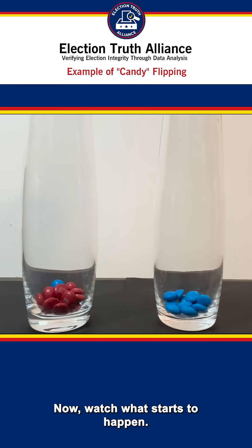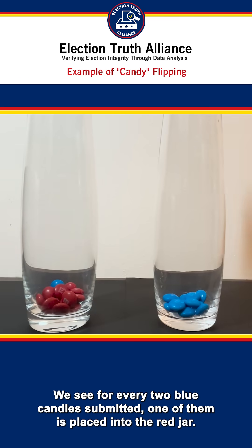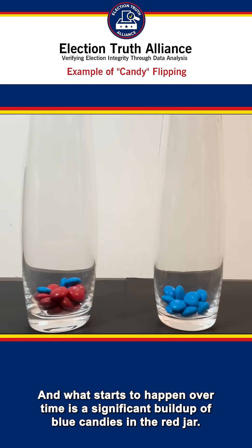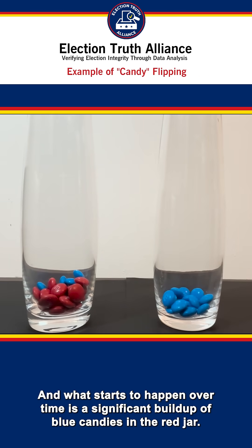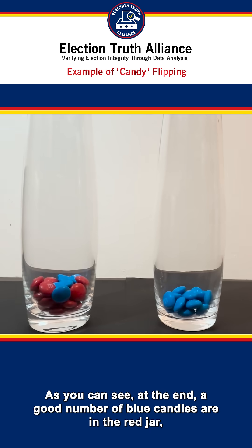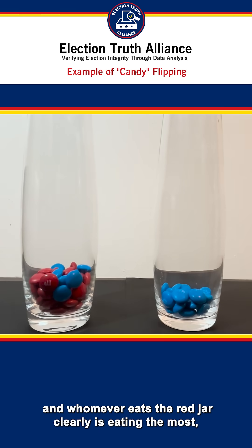Now, watch what starts to happen. We see, for every two blue candies submitted, one of them is placed into the red jar. And what starts to happen over time is a significant buildup of blue candies in the red jar. As you can see at the end, a good number of blue candies are in the red jar.